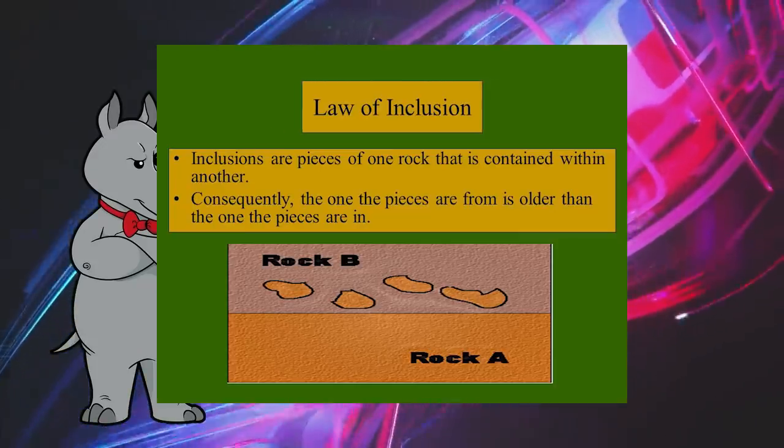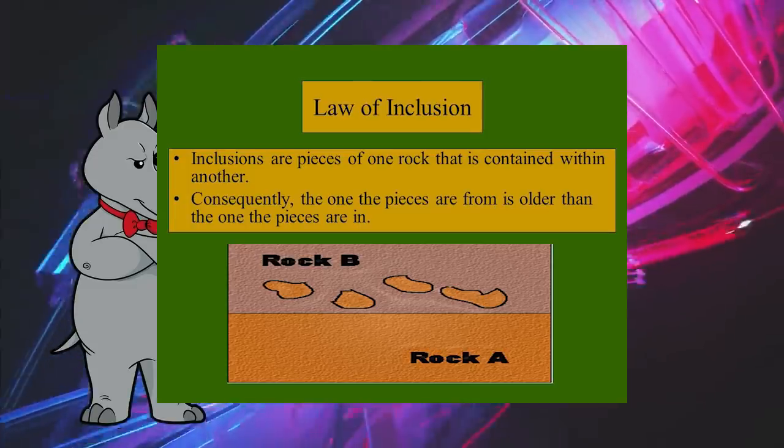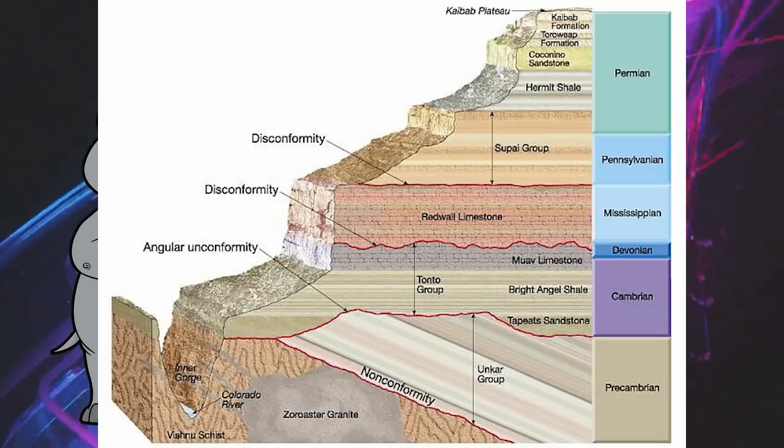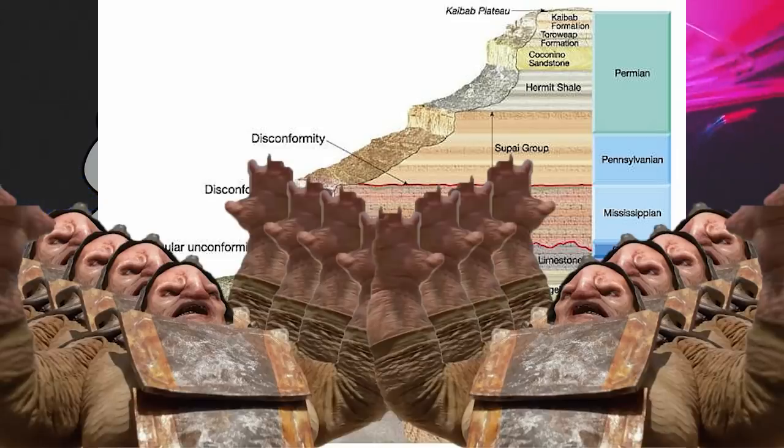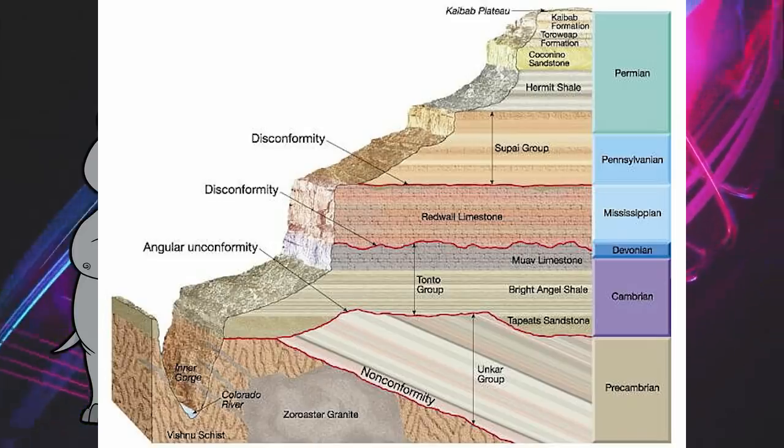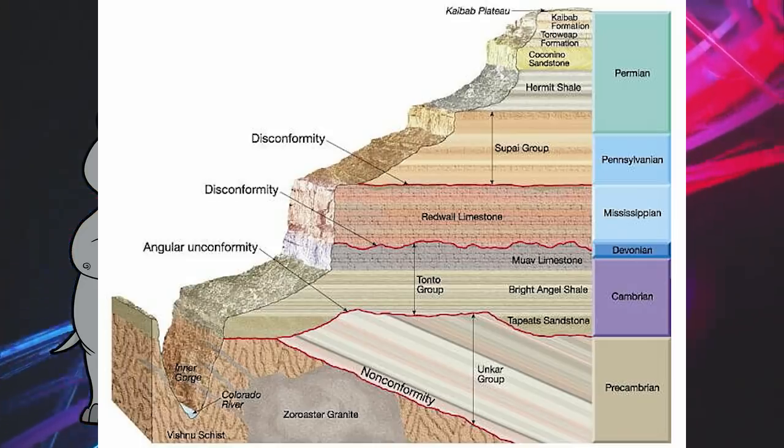The law of inclusions is similar, where rock fragments inside another rock must be older than the rock containing the fragments. So looking at the diagram, the Vishnu schist would be the oldest because it is the deepest. The Unkar group is younger than the Vishnu schist, but what about the Zoroaster granite? Well, it cuts through the schist, so it must be younger than that, but it is cut off by the same nonconformity as the schist. So it does not appear to cut through the Unkar group. Therefore, the Unkar group is newer than the granite.